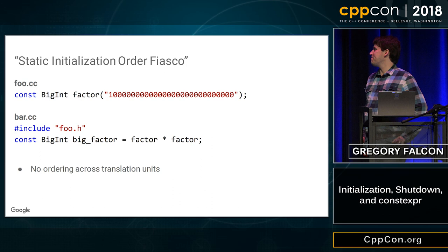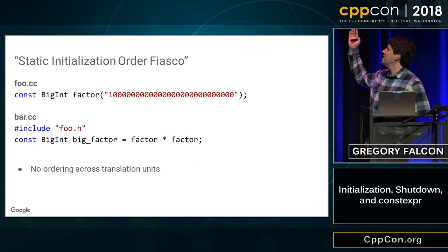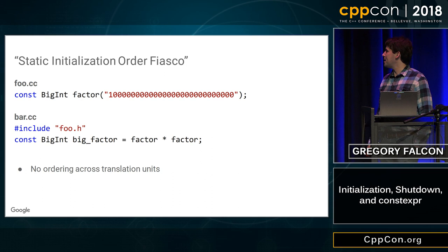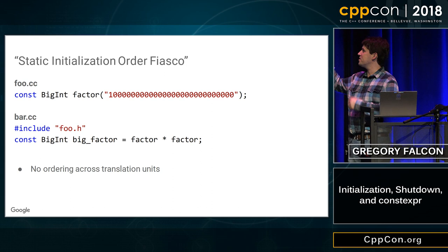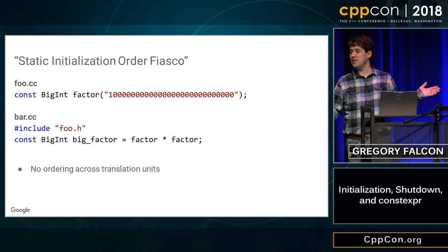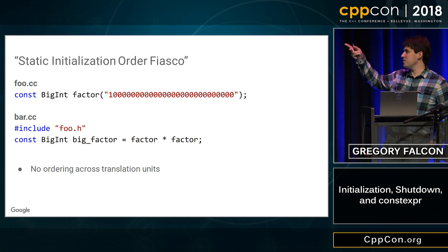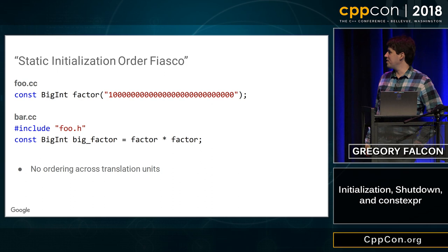In this sample code, I've got a BigInt named factor in foo.cc, and then bar wants to square it. This might work for you for a long time if your tool chain decides that foo.cc initializes first and bar.cc second. But one day you upgrade your tool chain, modify your build file, or breathe on it wrong — and suddenly the initialization order swaps and the BigInt initialization is reading from an object that hasn't been initialized yet, and everything blows up.